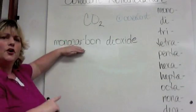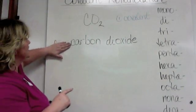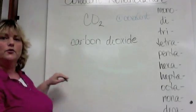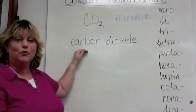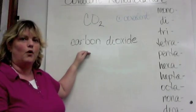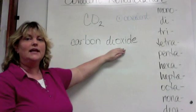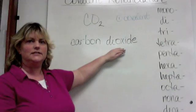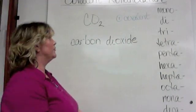There is a small rule here: when your first element has only one, you actually don't write 'mono' — you just write the name of the element, because writing the name alone implies one. However, for the second element, even if you only have one, you still must include the prefix.